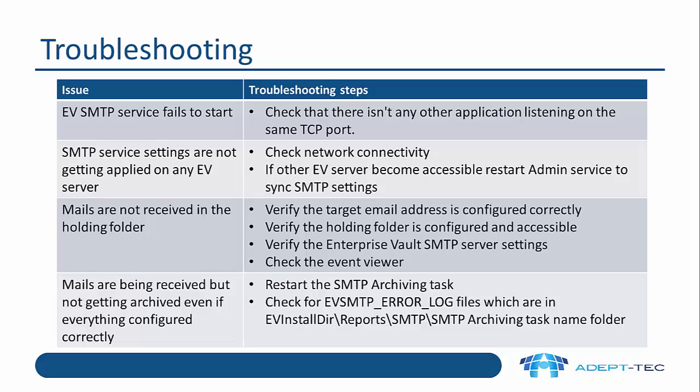For troubleshooting: if the EV SMTP service fails to start, check there are no other applications listening on the same TCP port. If SMTP service settings are not being applied to another EV server, check network connectivity; if that server becomes accessible after changes, restart the admin service to sync the SMTP settings. If mails are not received in the holding folder, verify target email addresses are configured correctly, the holding folder is configured and accessible, check SMTP server settings and the event viewer. If mails are being received but not archived, restart the SMTP archiving task — any configuration changes require a task restart. Finally, check the error log files.